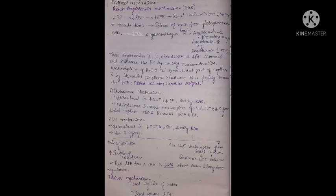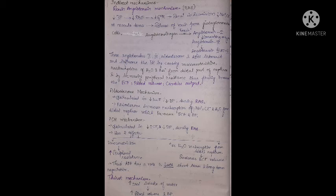Indirect mechanism — renin-angiotensin mechanism: decreased BP reduces renal blood flow and GFR, causing renal ischemia or decreased sodium and chloride at the macula densa, triggering renin release from juxtaglomerular cells. Renin acts on angiotensinogen to form angiotensin I, which is converted to angiotensin II by angiotensin-converting enzyme. Angiotensin II is the most potent vasoconstrictor, and along with aldosterone and ADH, causes vasoconstriction, water and sodium reabsorption from the distal nephron, increased peripheral resistance, ECF volume, and cardiac output.